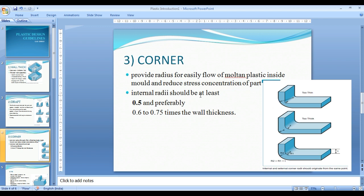Internal radius should be at least 0.5 and preferably 0.6 to 0.75 times the wall thickness.